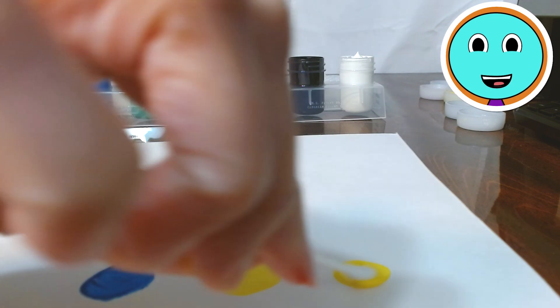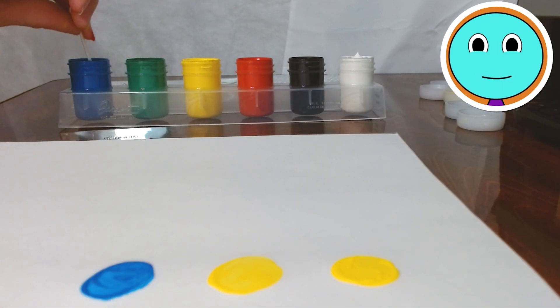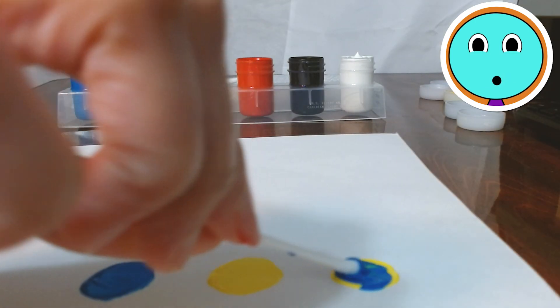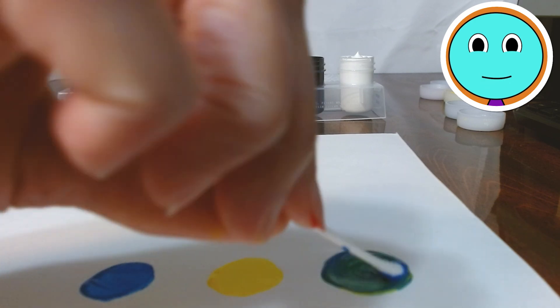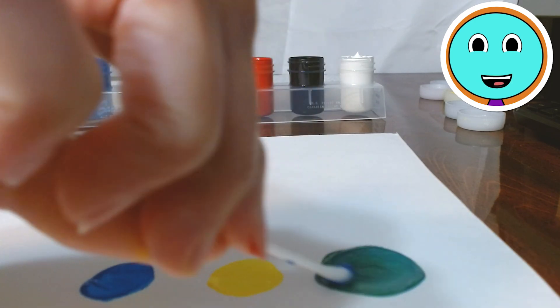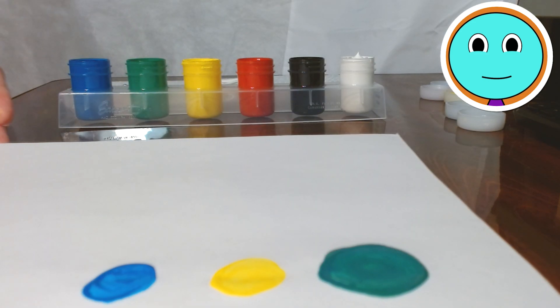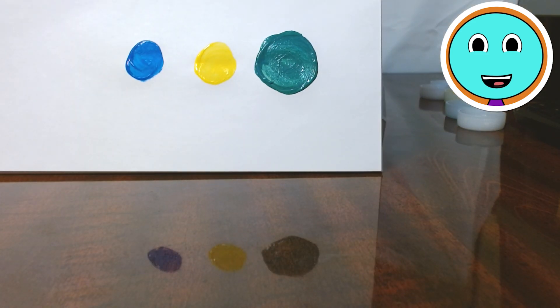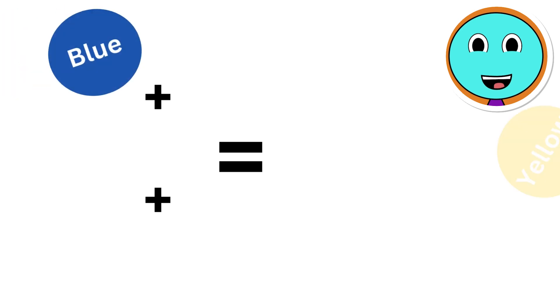There's the yellow. And here comes the blue. She's mixing it. All right, time for the reveal. Yay! It is green! Blue and yellow makes green.